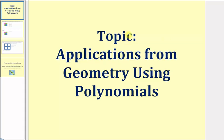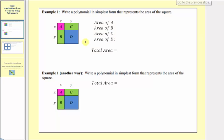Welcome to a lesson on applications from geometry using polynomials. In our first example, we're asked to write a polynomial in simplest form that represents the area of the square. We're actually going to solve this problem twice using two different methods.